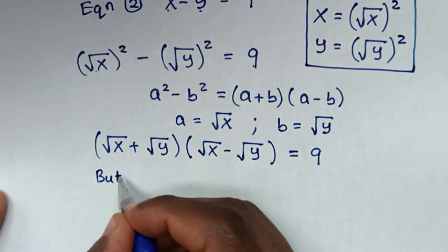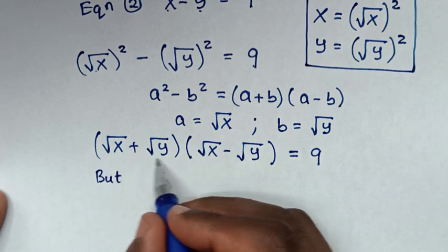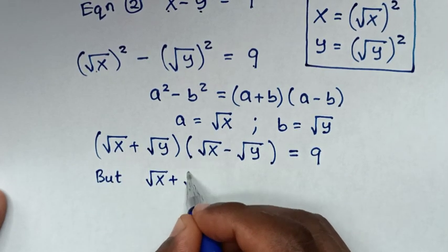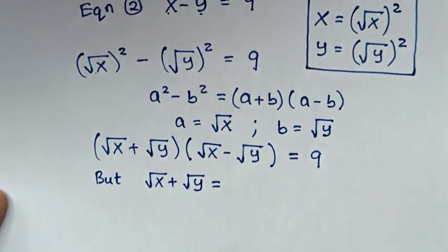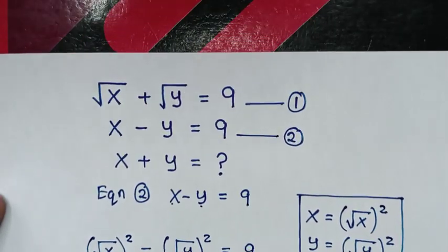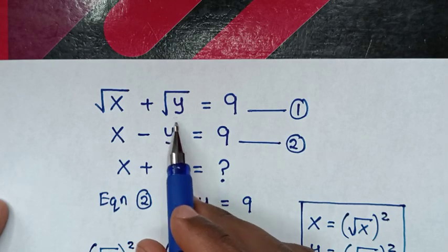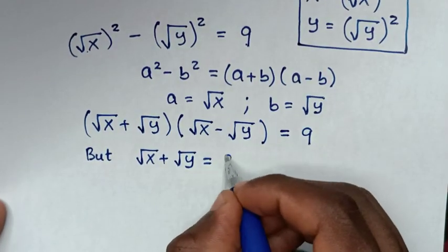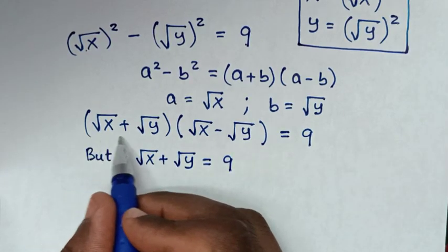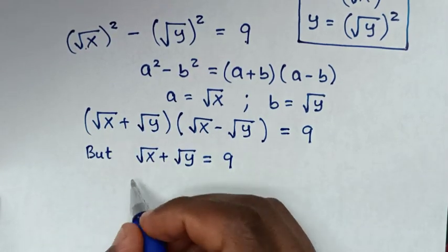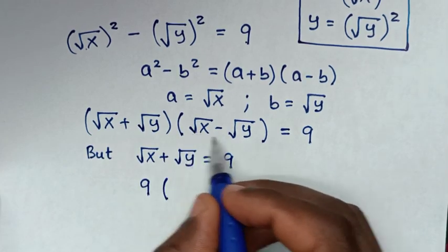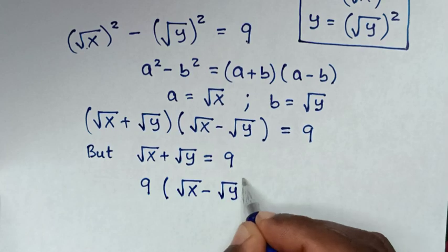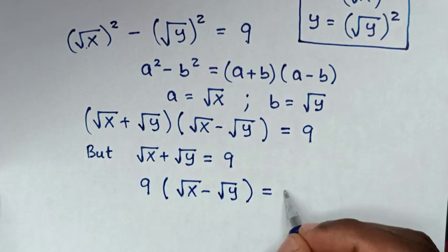From equation 1, √x plus √y is equal to 9. So we substitute 9 in place of (√x + √y), giving 9 times (√x minus √y) equals 9.